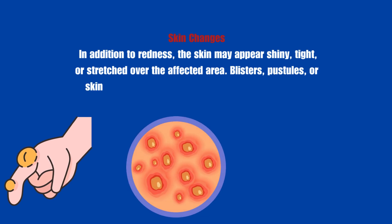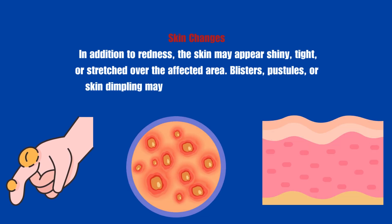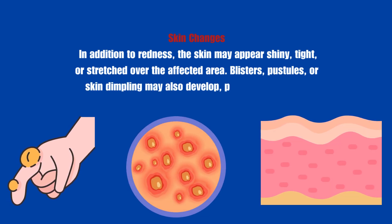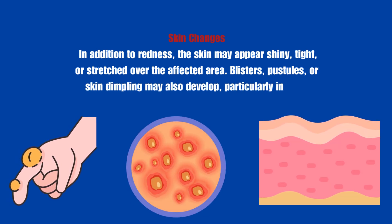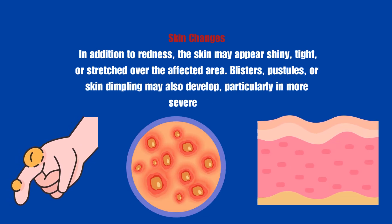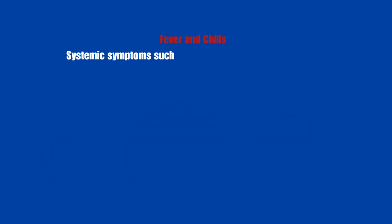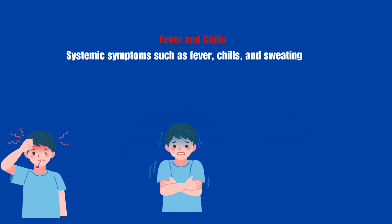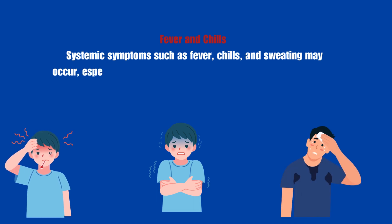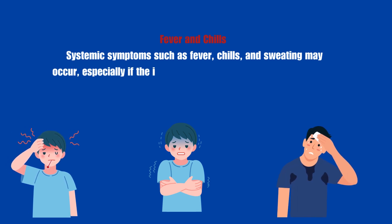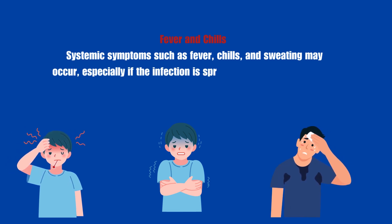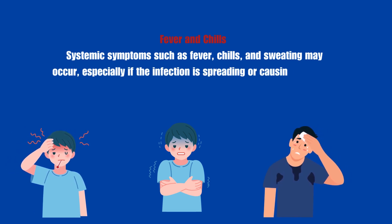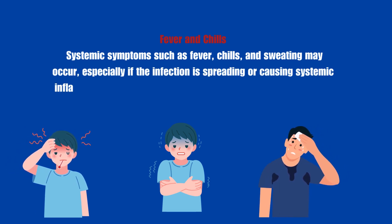Blisters, pustules, or skin dimpling may also develop, particularly in more severe cases. Fever and chills: Systemic symptoms such as fever, chills, and sweating may occur, especially if the infection is spreading or causing systemic inflammation.